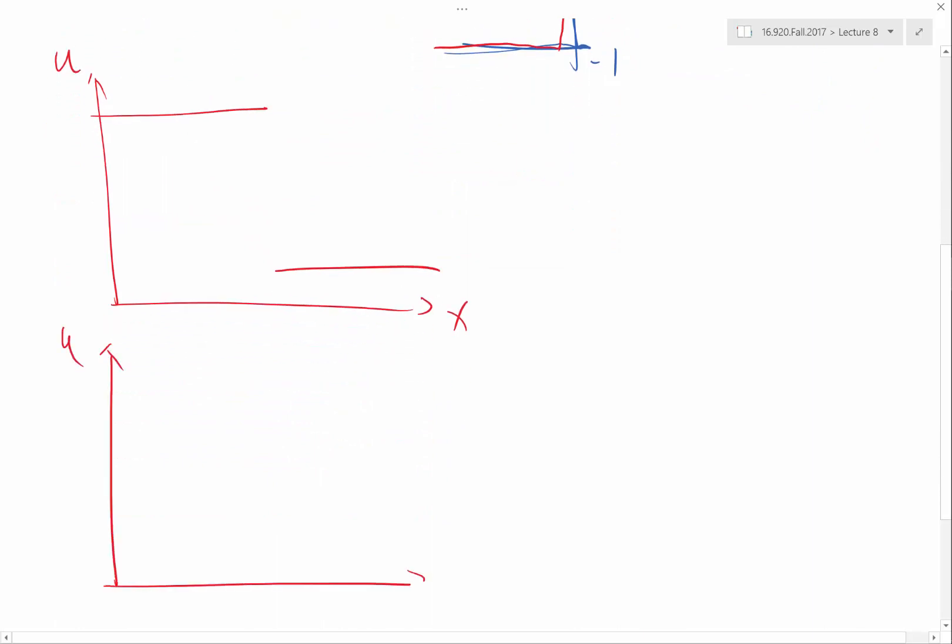One case is when the left constant is greater than the right constant. Another case is the opposite, the left is lower than the right. So for the first case, we know what is the discontinuity going to be doing.